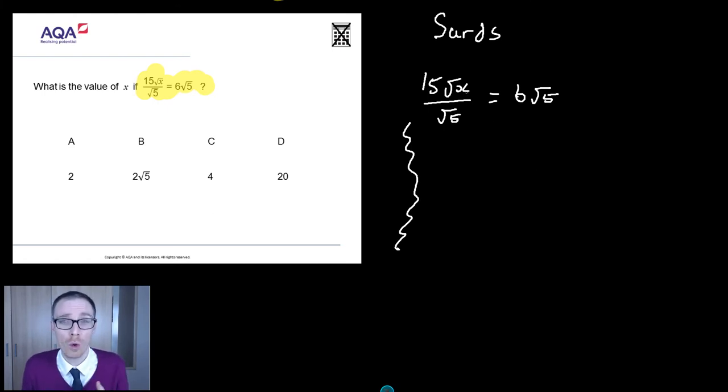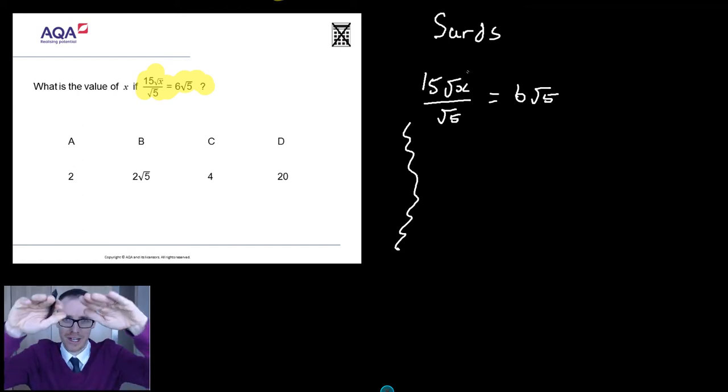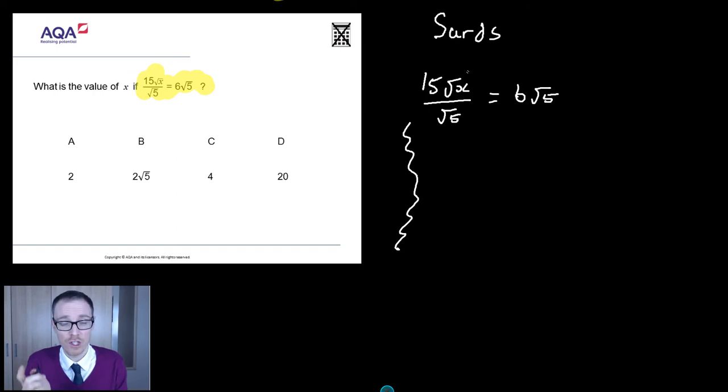I have got 15√x divided by the square root of 5 is equal to 6√5. Now, just if you've seen any of the other videos with solving equations, you know I like to try and unwrap this x. So, I've got an x. It's been square rooted, it's been times by 15, and it's been divided by √5. To unravel that, I've got to do the last thing first. So, I'm going to get rid of a divide by √5. So, I'm going to multiply both sides by √5.